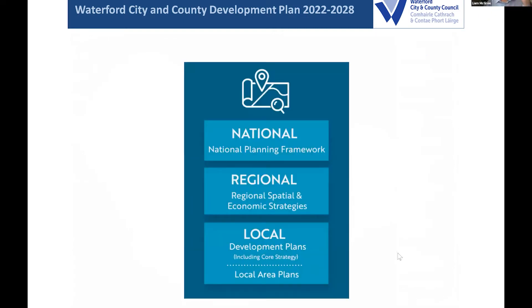Our development plan falls into a hierarchy of spatial plans, starting with the national planning framework, which was adopted by government in 2018 and applies to the state as a whole. Below that, the country is divided into three regions for regional planning purposes. We find ourselves in the southern region, and the Southern Regional Assembly adopted a regional spatial and economic strategy — the RSES — which came into effect in 2020. Each local authority then has to give effect to national and regional policy and bring some local flavour to deal with local issues in their own development plans.